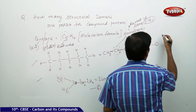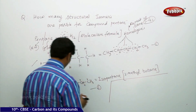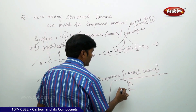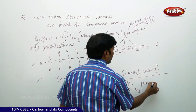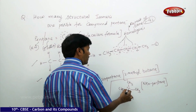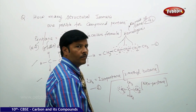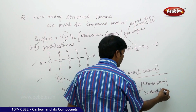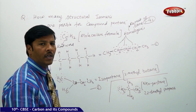For the third isomer, we can create a central branched structure like this: a central carbon with CH3, CH3, CH3, CH3 attached to it. This is called neopentane. Writing the IUPAC name: the longest chain is 1, 2, 3 — on the second carbon there are two methyl groups, one methyl group here and one methyl group here. So therefore, the IUPAC name is 2,2-dimethylpropane.